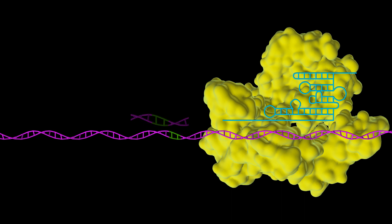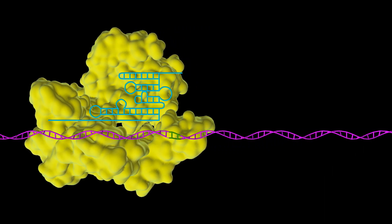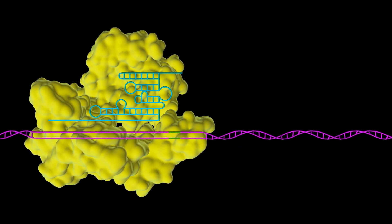Cas9 binds to the guide RNA and scans the cell's DNA, looking for a particular recognition sequence, which is two G bases next to each other. When it finds such a sequence, Cas9 opens up the DNA double helix to check whether the adjacent sequence is complementary to the guide RNA.